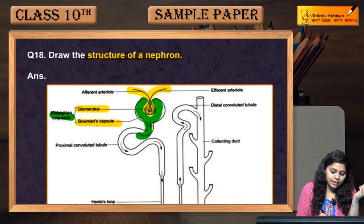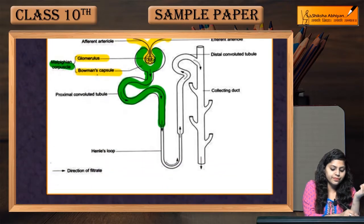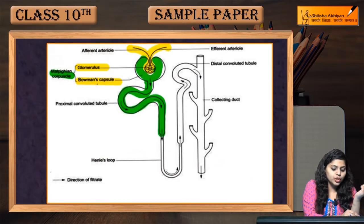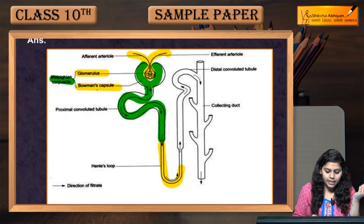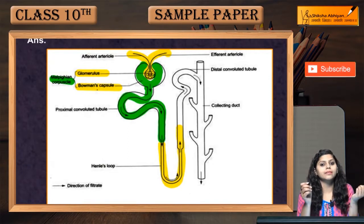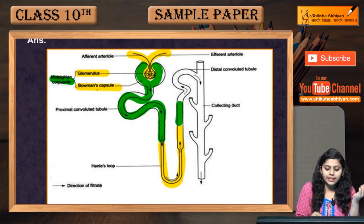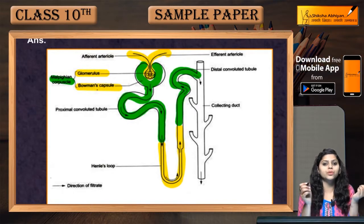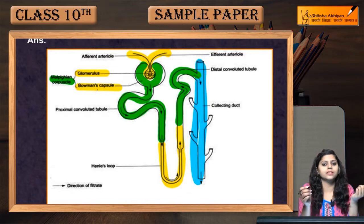From here, the tubule exits as the proximal convoluted tubule. Further, a U-shaped tube-like structure forms, that is Henle's loop or loop of Henle. Next is the DCT, that is the distal convoluted tubule, and at the end is the collecting duct.